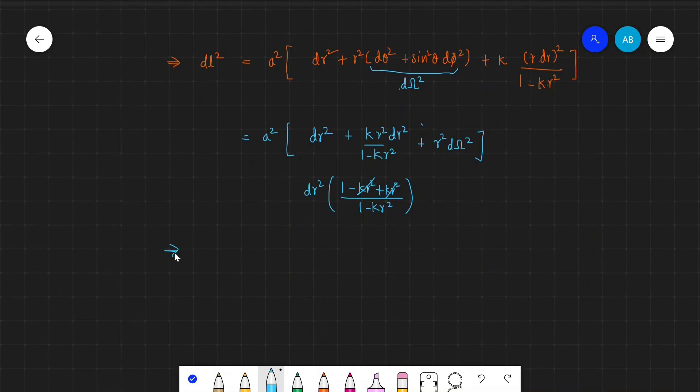Hence what remains is dl² equals a² times dr² divided by 1 minus kr² plus r² dω².